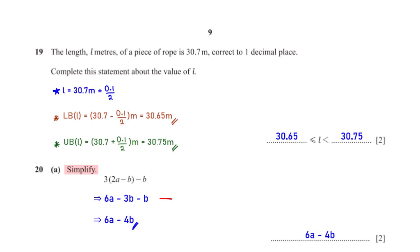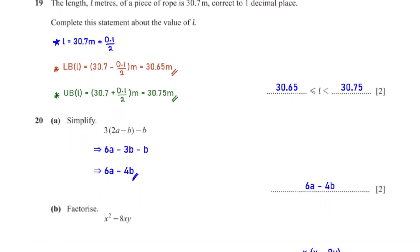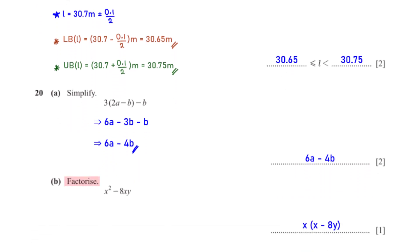Simplify 3(2a − b) − b. Expanding: 3 × 2a = 6a, 3 × (−b) = −3b. Grouping like terms: −3b − b = −4b. So we have 6a − 4b. Factorise x² − 8xy. The terms have a common factor of x; factoring out x leaves x(x − 8y).